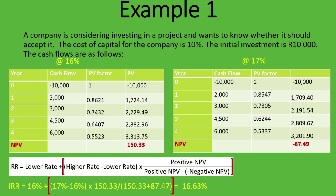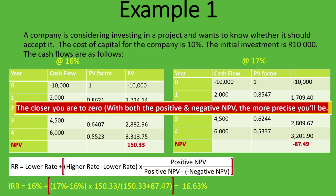To summarize: you find the positive NPV closest to zero and the negative NPV closest to zero, then apply the formula to get your answer. The closer both NPVs are to zero, the more precise your IRR calculation will be. That's exactly what we did — getting 16% giving a small positive and 17% giving a small negative — yielding a precise IRR of 16.63%.